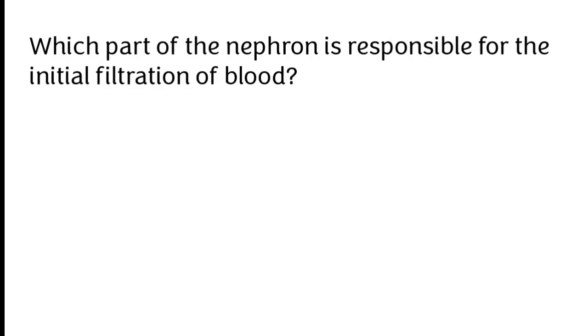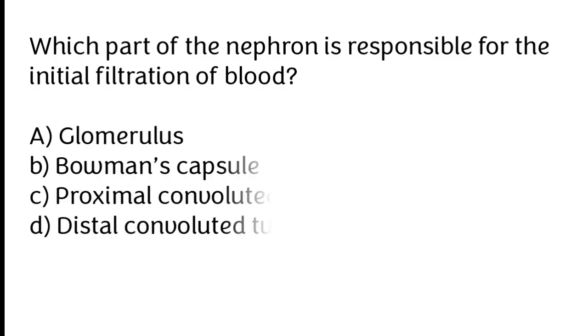Which part of the nephron is responsible for the initial filtration of blood? A) Glomerulus, B) Bowman's capsule, C) proximal convoluted tubule, D) distal convoluted tubule.